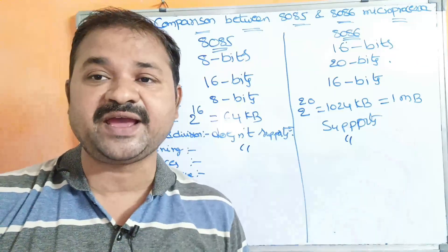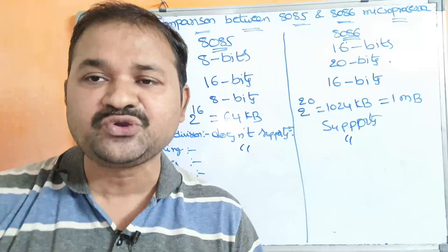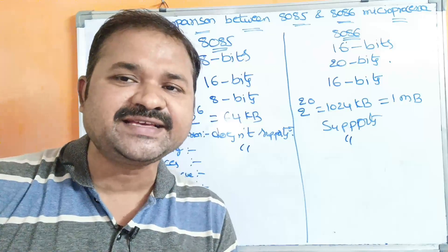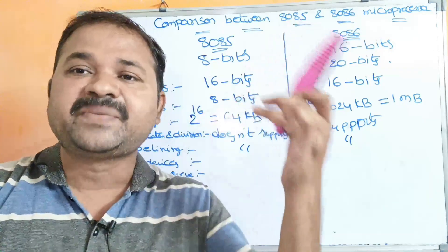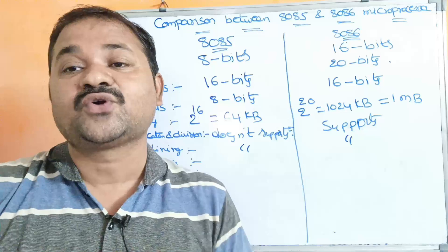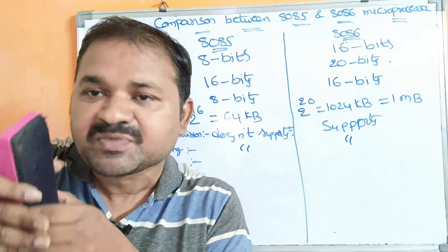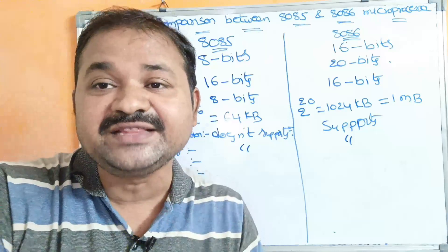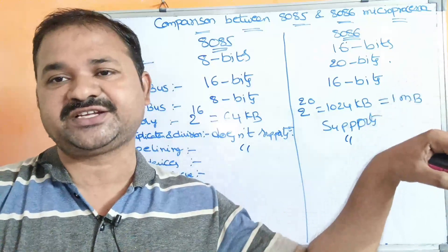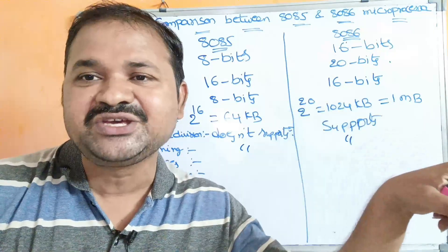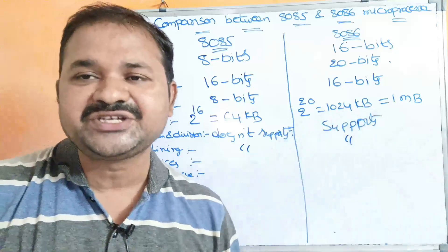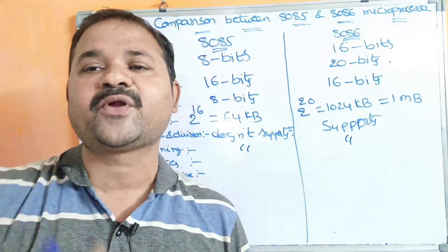The 8086 microprocessor supports pipelining. It has two units: the Bus Interface Unit and the Execution Unit. While the Execution Unit is executing an instruction, the Bus Interface Unit can simultaneously fetch the remaining instructions from memory. So fetching and execution happen simultaneously, allowing 8086 to execute more instructions in less time.